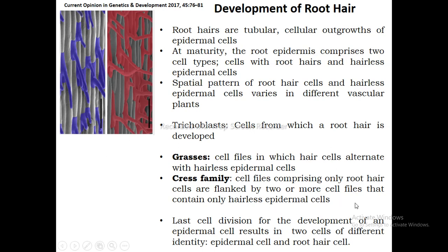The last cell division for the development of an epidermal cell results in two cells with different identity. One cell will become a normal hairless epidermal cell and another cell will become a root hair cell. So the last division gives two kinds of cells: hairless epidermal cells and root hair cells.